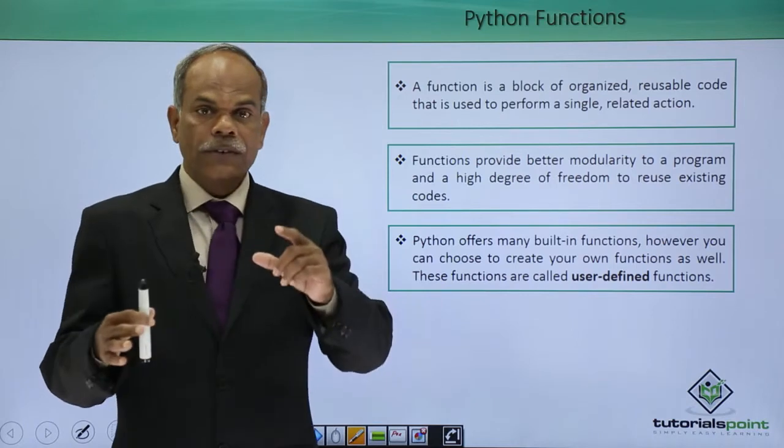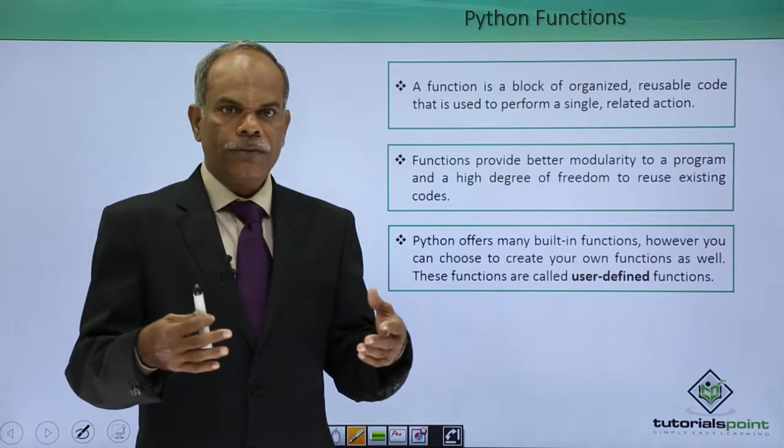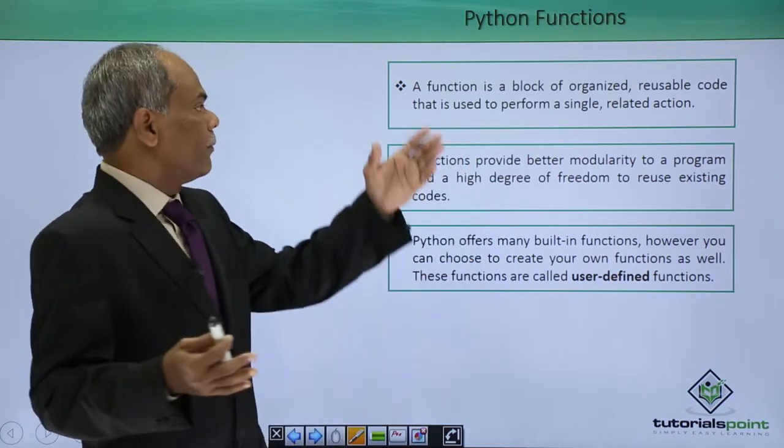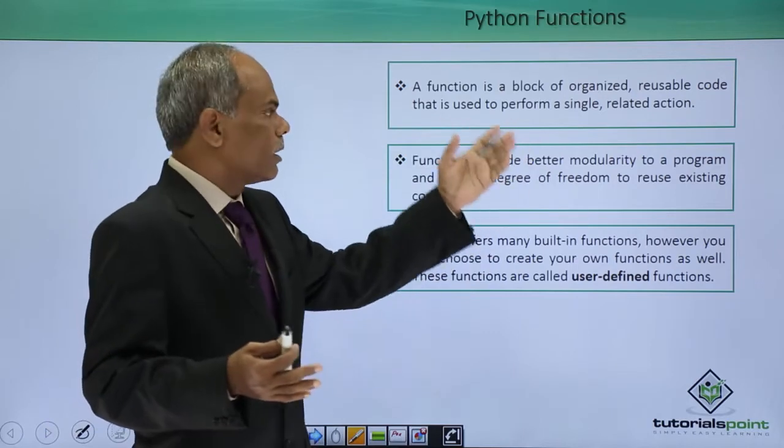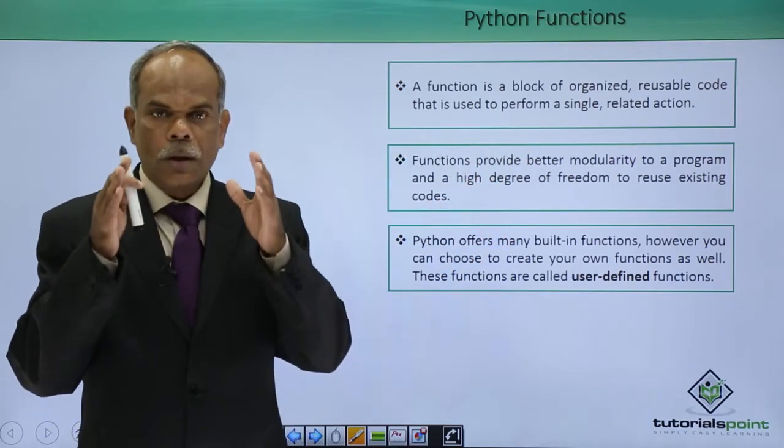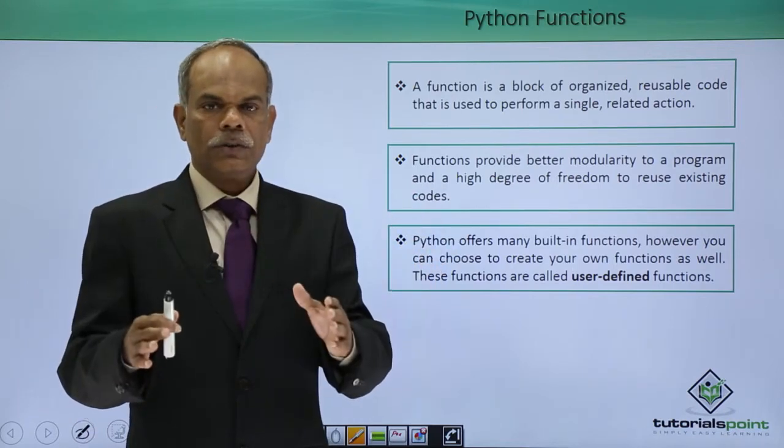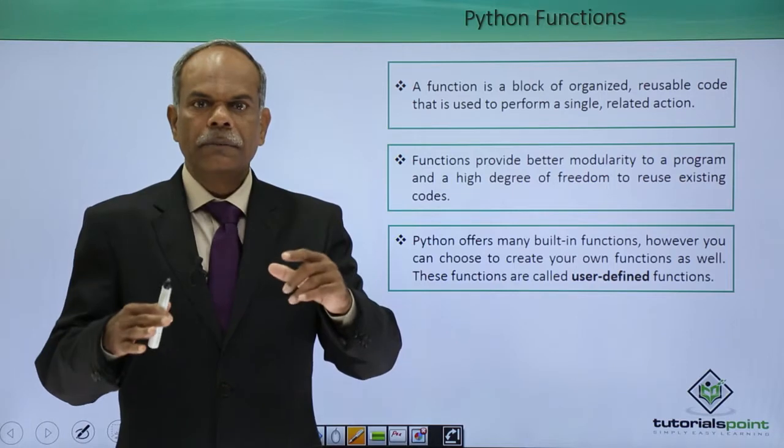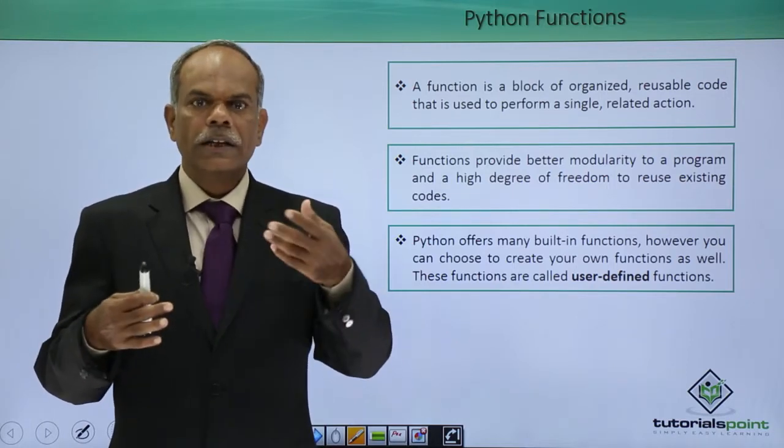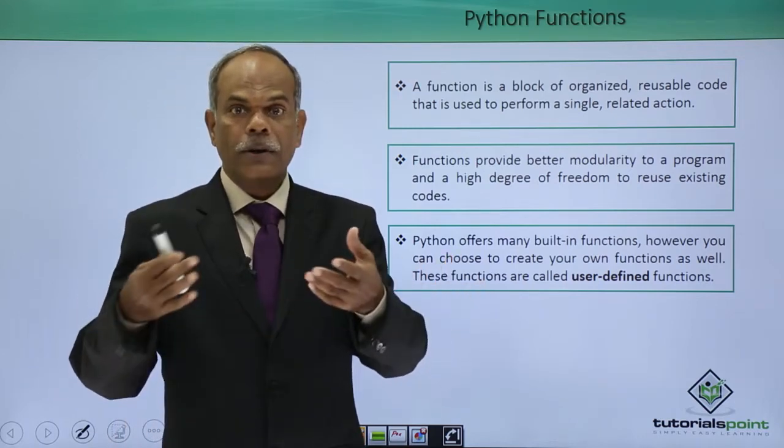That function can be reused or called multiple times as and when required from anywhere in the program. In that sense, a function is a block of organized code which can be reused. The objective of the function is to perform a single task, so that the same task can be repeatedly performed by the program with a variable number of arguments at different points of time.